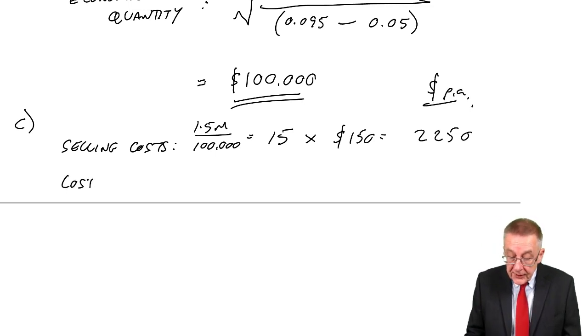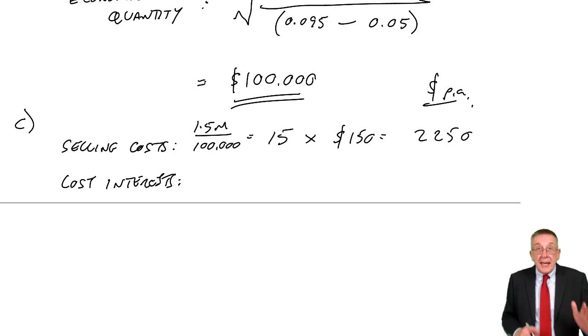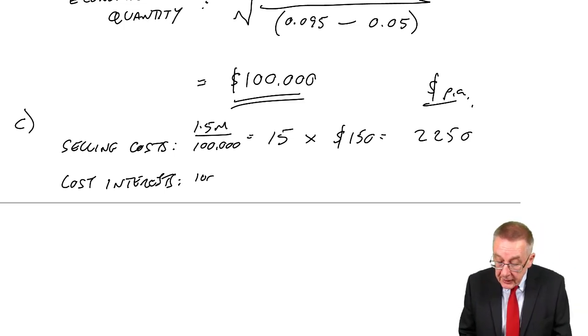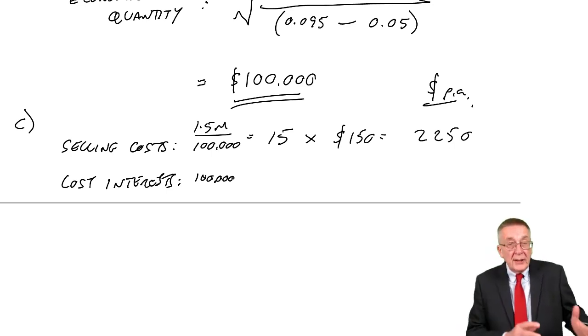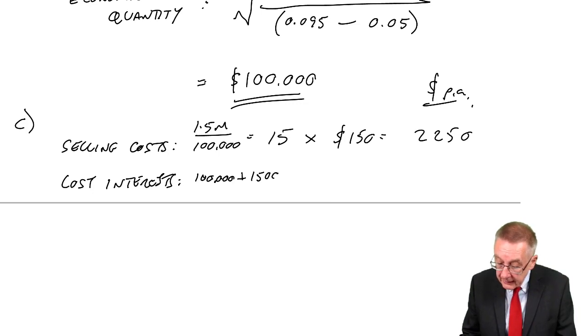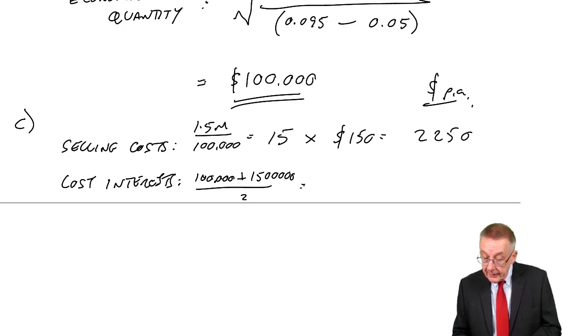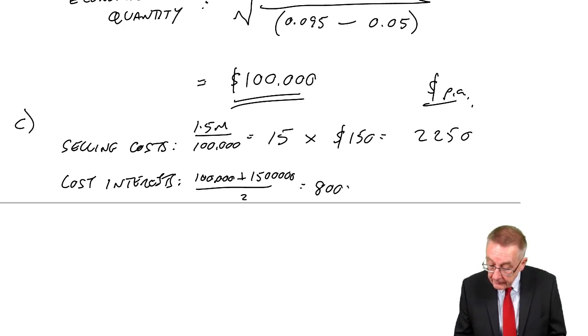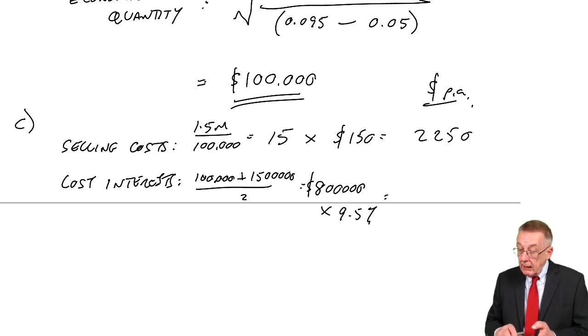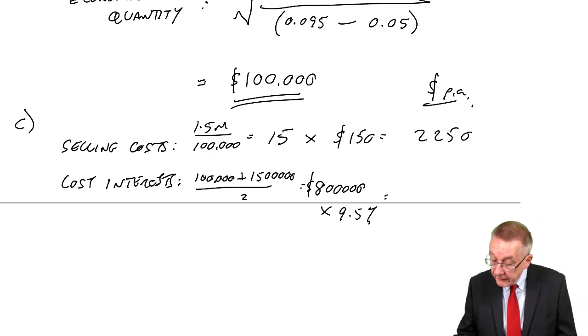There's the lost interest on our investments. Just like before, at the beginning of the year, we're only losing interest on 100,000, but by the end of the year, we're losing interest on the full 1.5 million. So on average, we're losing interest on 800,000. We're losing interest at 9.5%, so the lost interest is $76,000.